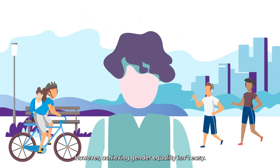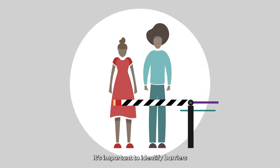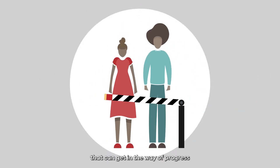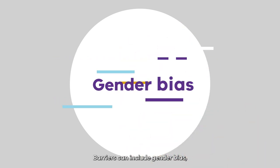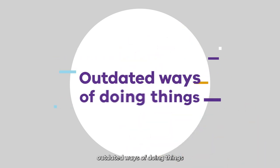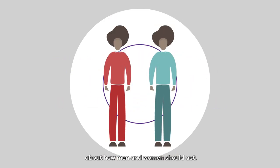However, achieving gender equality isn't easy. It's important to identify barriers that can get in the way of progress so they can be removed. Barriers can include gender bias, outdated ways of doing things and strong gender stereotypes about how men and women should act.